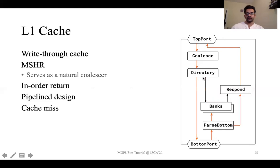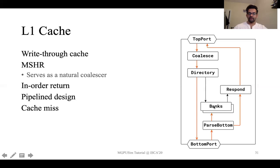In case of an L1 cache miss, the request is forwarded to the bottom port, which then forwards the request to the L2 cache. If the L2 cache has a hit or a miss, depending on how it handles the request, it will eventually return the data to the L1 cache, going through the parse bottom stage. Once it goes through the parse bottom stage, the bank data is updated in the L1 cache and then responded to accordingly to the compute unit.